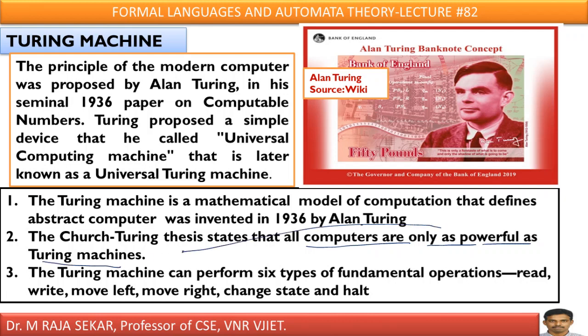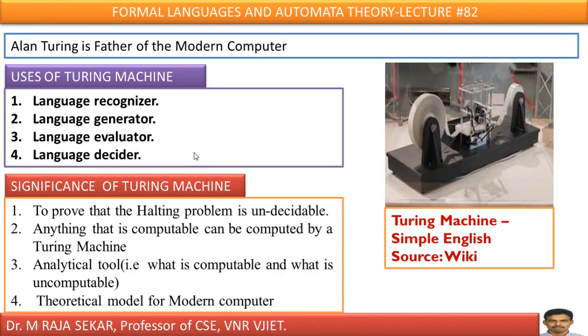I will discuss about this in future classes. The Turing machine can perform six types of fundamental operations. It can read, it can write, it can move left, it can move right, even it can change the state, even it can halt. These are six possible operations that can be performed by Turing machine.